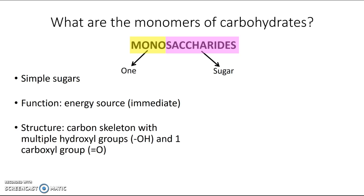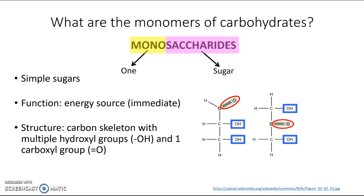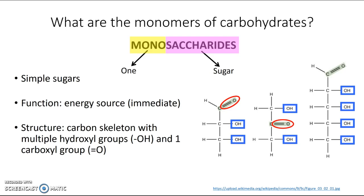As for their structure, every monosaccharide is a simple carbon skeleton with multiple hydroxyl groups and one carboxyl group. Looking at this simple monosaccharide, we've got two hydroxyl groups and a carboxyl group. Here's another one — very similar, but the hydroxyl groups are over here and the carboxyl group is in the middle, so the carboxyl group does not have to be at the tip. On an even bigger one, you can again see multiple hydroxyl groups and one carboxyl group.